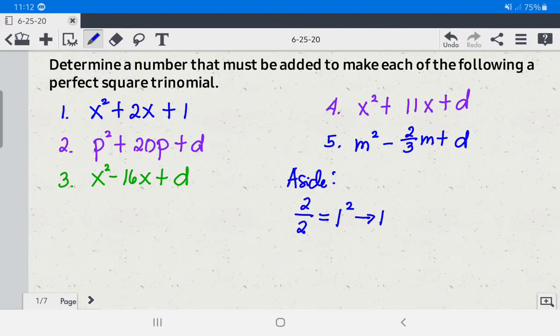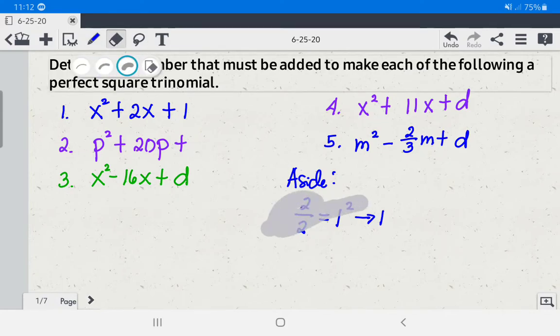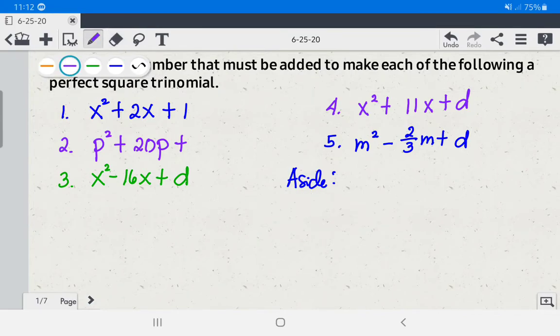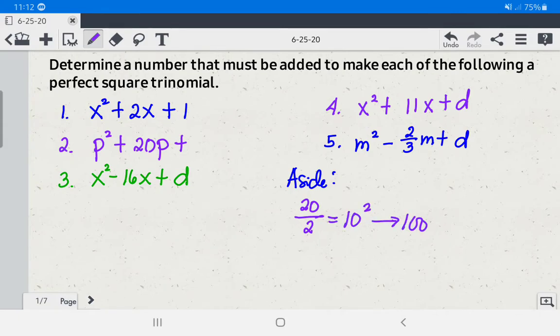We have p squared plus 20p plus d. For the second example, the numerical coefficient of the middle term is 20. You divide it by 2, so we have 10. Then square it. We have 100. So 100 must be added to this expression to make it a perfect square trinomial. We have p squared plus 20p plus 100.